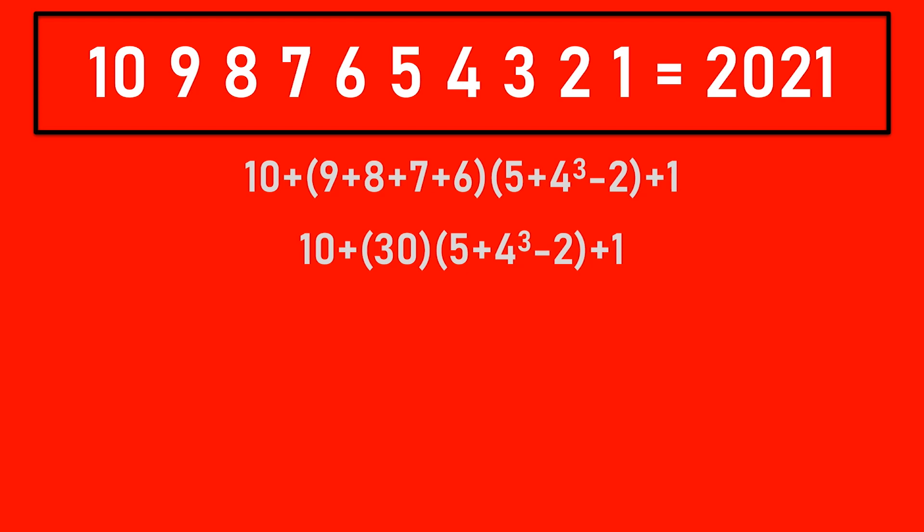So adding 5 plus 4 to the power of 3 minus 2 that gives an answer of 67. Now let's multiply 30 with 67 which gives an answer of 210.